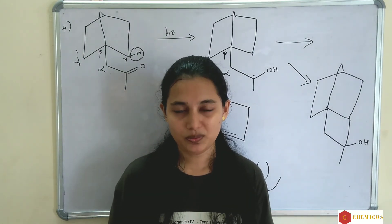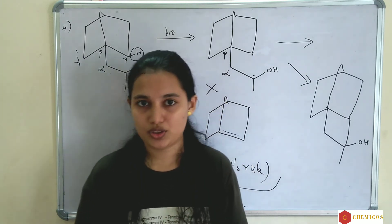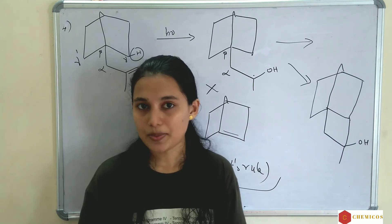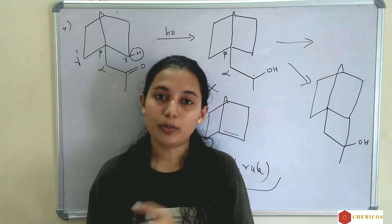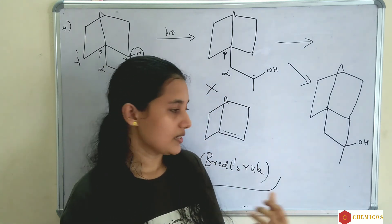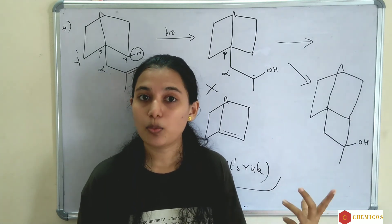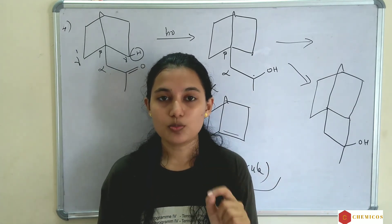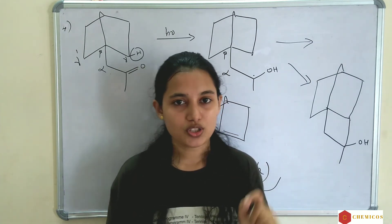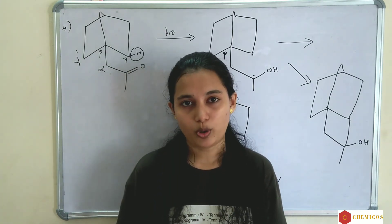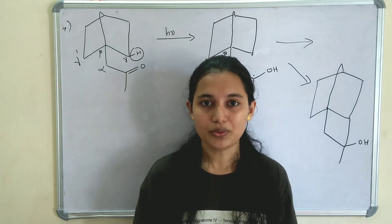To summarize today's session: Norrish type 2 reactions are given by ketones having gamma hydrogen, and gamma hydrogen abstraction is the main process — it is called McLafferty rearrangement. The steps of McLafferty rearrangement were discussed. Bredt's rule was discussed. The nearest gamma hydrogen is abstracted. If two alkyl groups are present on the alpha carbon, it gives cyclization instead of Norrish type 2 reaction. In the next video, we will see another photochemical reaction.